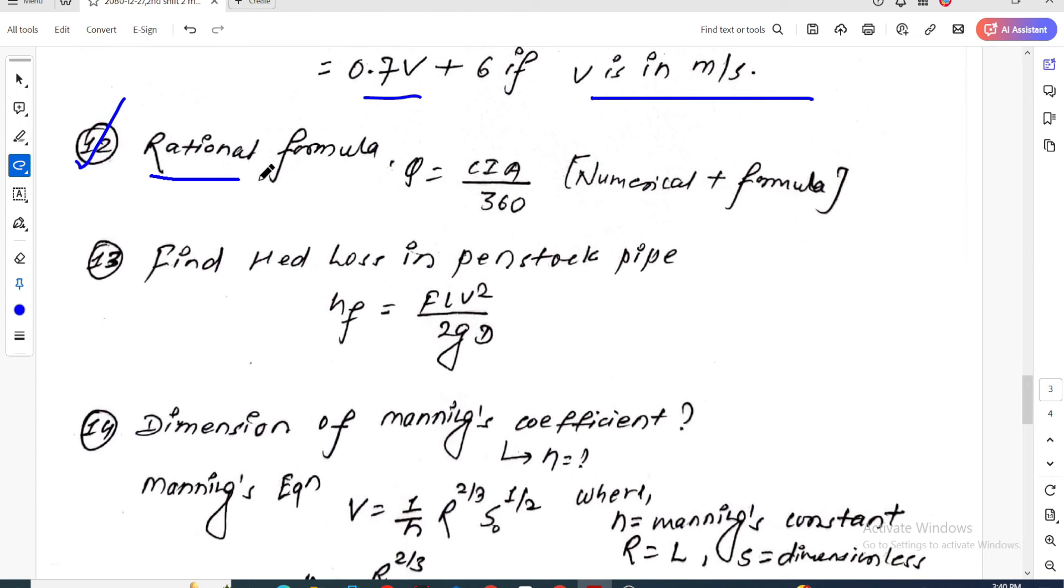Question twelve is about rational formula. The formula is Q equals CIA divided by 360, where Q is the runoff flow calculated using the rational method.